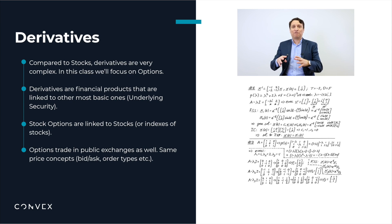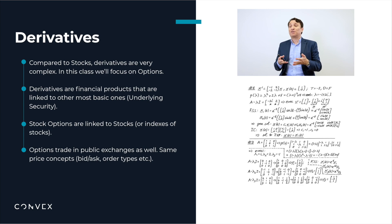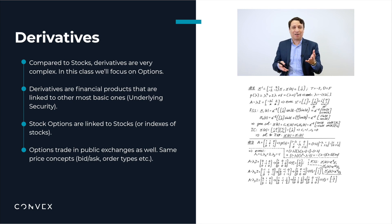Remember that derivatives don't live in their own world — they are connected to other financial products, and that's kind of the key feature that they have. They are not completely free, and for derivatives in general, the laws of supply and demand don't apply. The good thing about derivatives, or at least some derivatives, is that they are traded in public markets. We could go to market and buy some derivatives, but in general, most derivatives trade in private markets or in markets that are beyond the reach of retail traders.